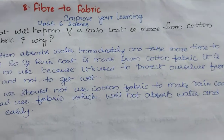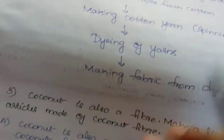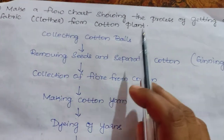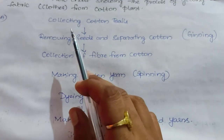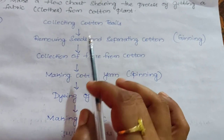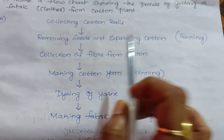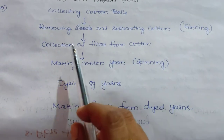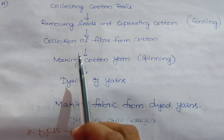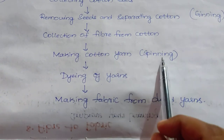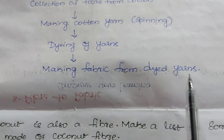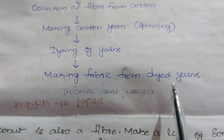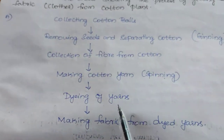Moving on to the second question: make a flowchart showing the process of getting fabric from a cotton plant. Here is the flowchart: first, collecting cotton balls; then removing seeds and separating cotton, which is called ginning; then collecting fiber from cotton and making cotton yarn, a process called spinning; after getting cotton yarn, dyeing of yarns, that is coloring; and finally making fabric from dyed yarns.